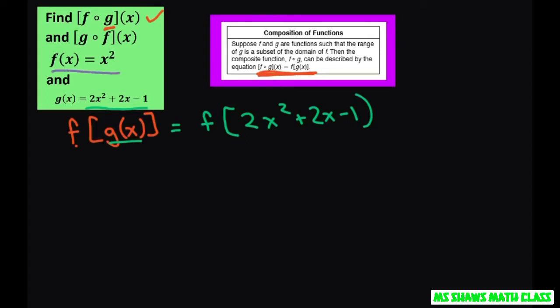So I take my f of x, my outer function, and I'm going to write this as f of 2x squared plus 2x minus 1 equals, and everywhere there's an x, I'm going to input what I'm evaluating, which is 2x squared plus 2x minus 1.